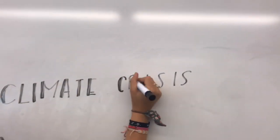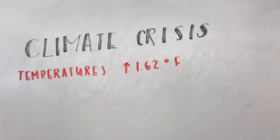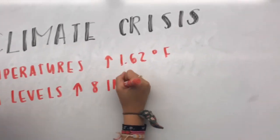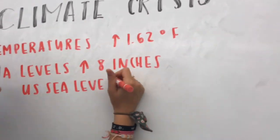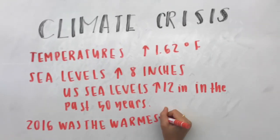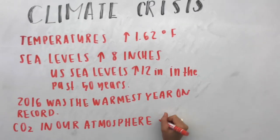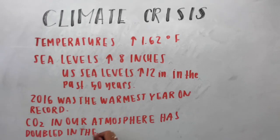Here are some quick facts about climate change. Globally, temperatures have risen by 1.62 degrees since the late 19th century. 2016 was the warmest year in the past 2,000 years. The carbon dioxide in our atmosphere has doubled in the past 150 years, and sea levels in the U.S. alone have risen between 7 to 12.5 inches in the past 50 years.